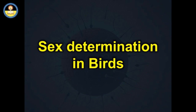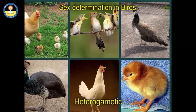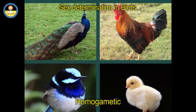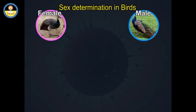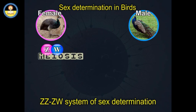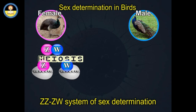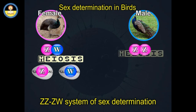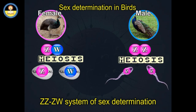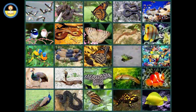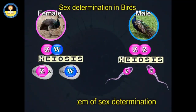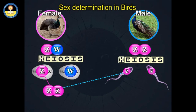Sex Determination in Birds. Most female birds are heterogametic and males are homogametic. Females in this system are ZW. After meiosis, half of the eggs have a Z chromosome and the other half have a W chromosome. Male birds are ZZ and all sperms produced by them contain a single Z chromosome. The ZZ-ZW system is found in birds, snakes, butterflies, some amphibians, and some fishes.